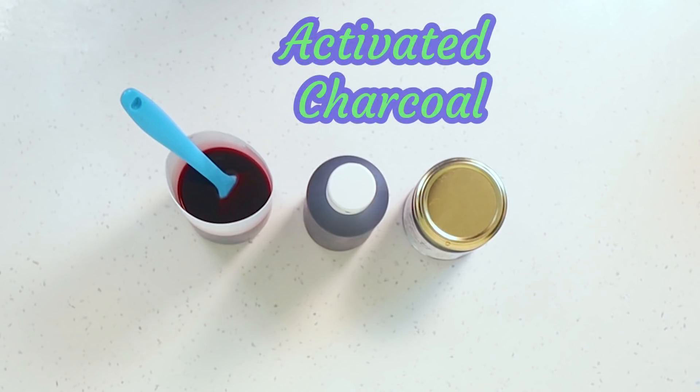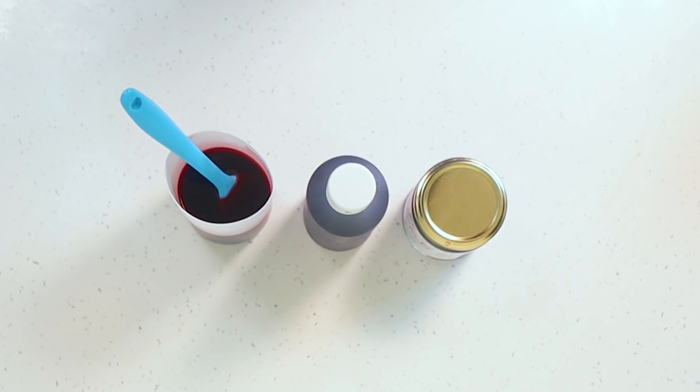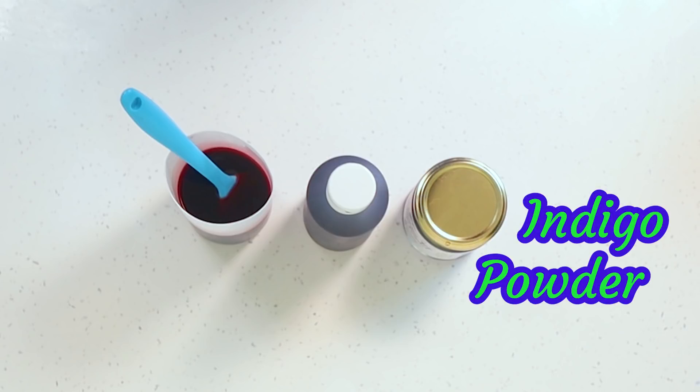Next I'm going to be using some activated charcoal. I don't want to blacken my soap, I'm going to use it at quite a low rate so I can get just a nice tint of gray. And then lastly I want a lovely brightish blue color so I'm going to be using some indigo powder.